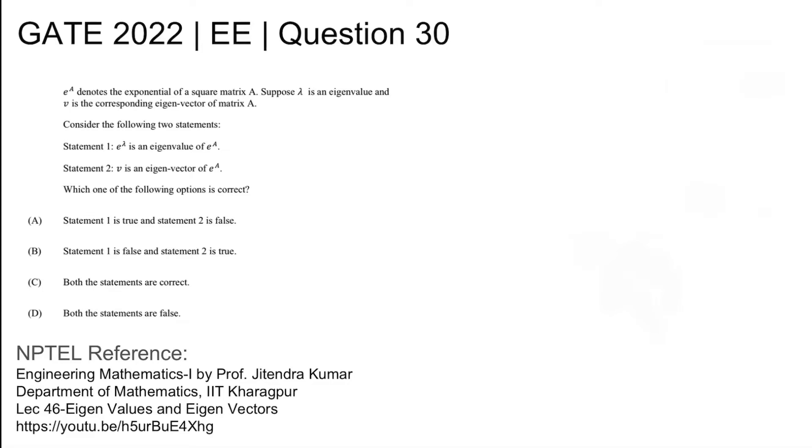Consider the following two statements. Statement 1: E to the power lambda is an eigenvalue of E to the power A. Statement 2: V is an eigenvector of E to the power A. Which one of the following options is correct?